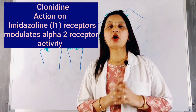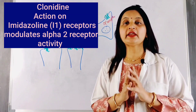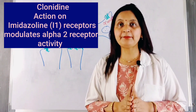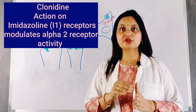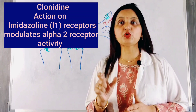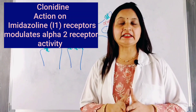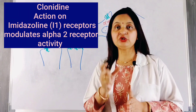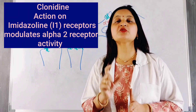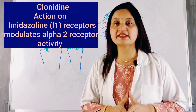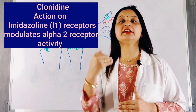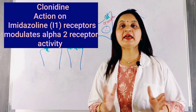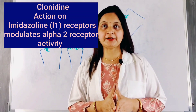Secondly, clonidine acts as an agonist on the imidazoline receptor, that is the I1 receptor, which is known to modulate alpha-2 receptor activity. By modulating alpha-2 receptor activity through the I1 receptor, there is a decrease in central sympathetic discharge, thereby decreasing blood pressure.